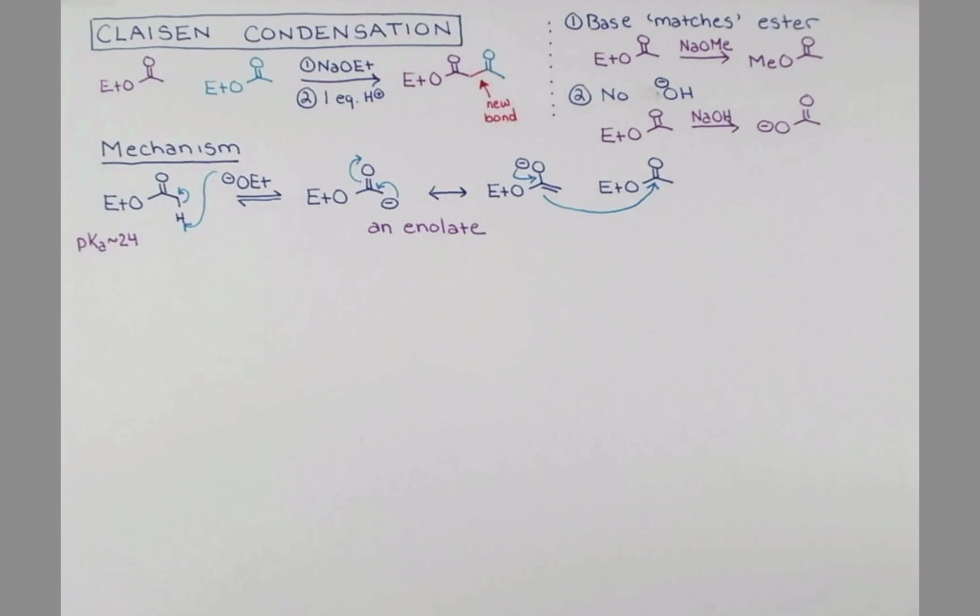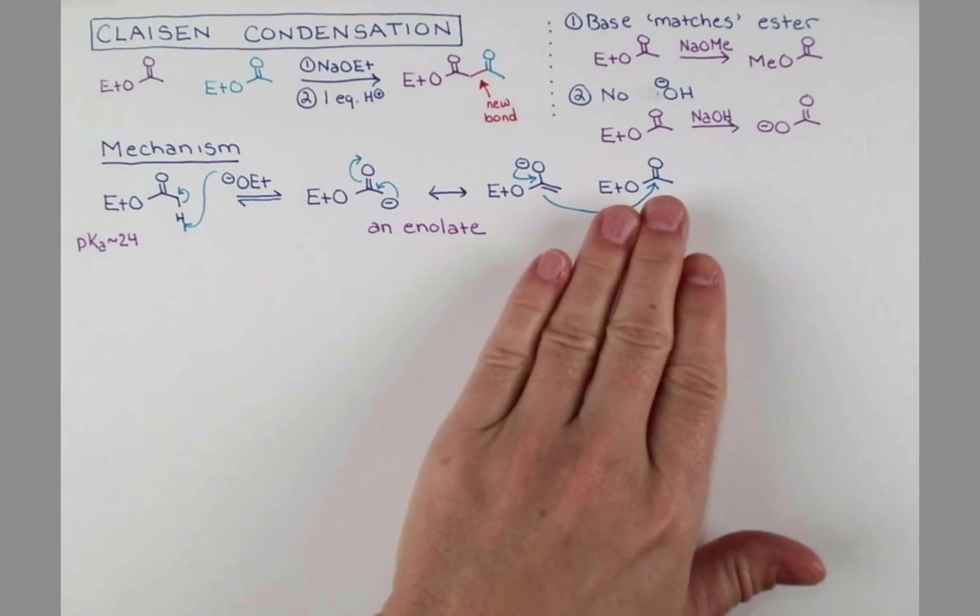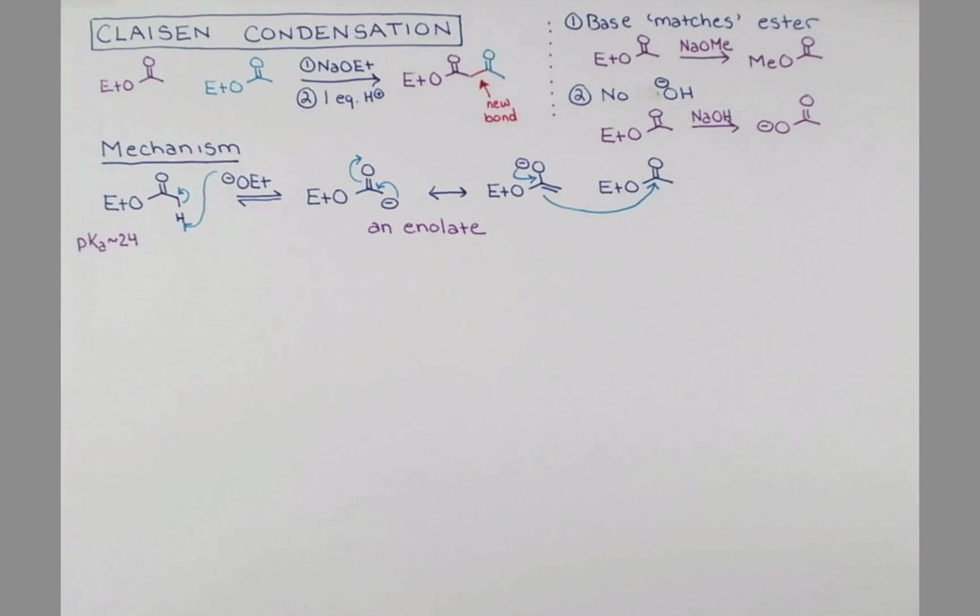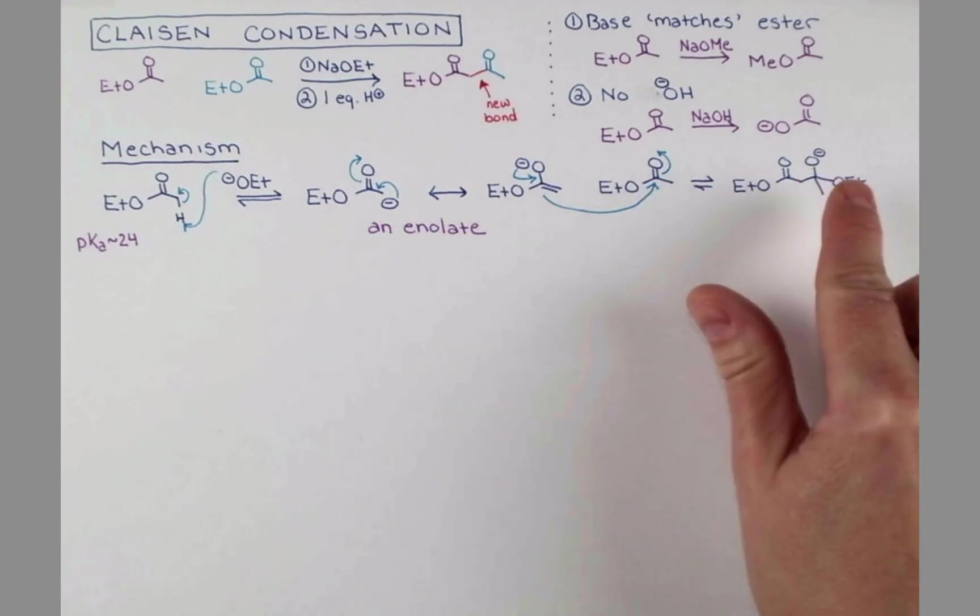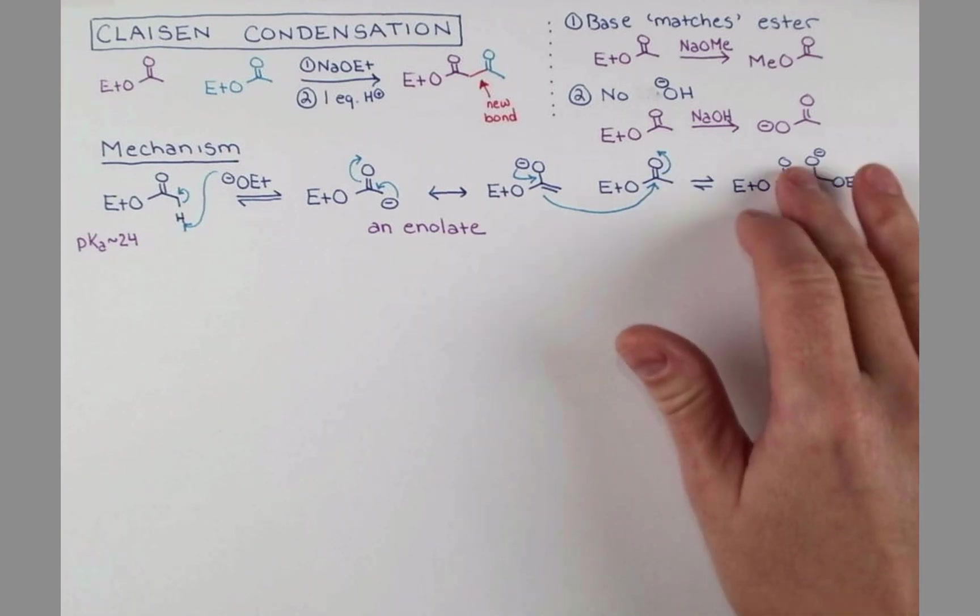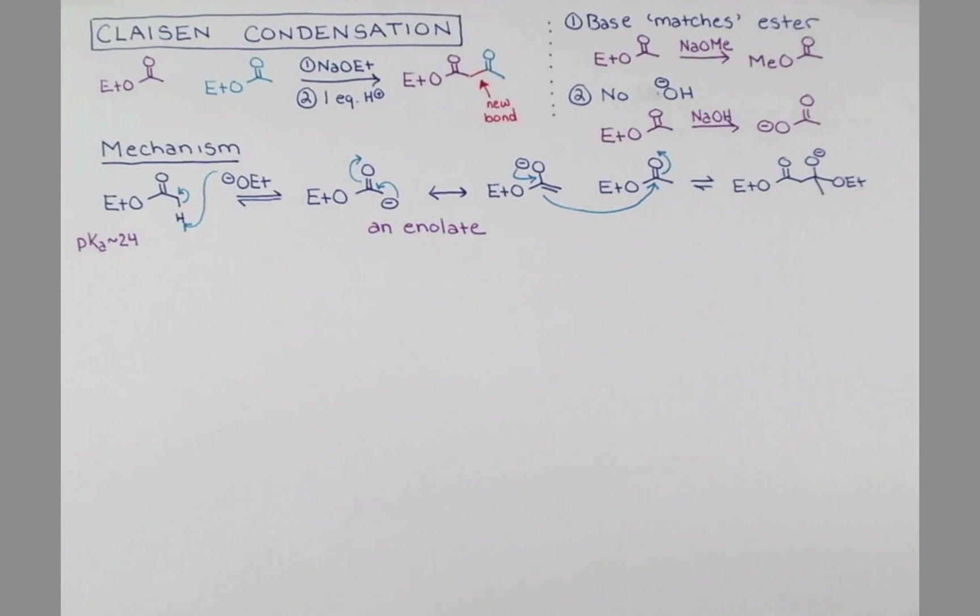And finally, we push electrons up onto oxygen so we don't make five bonds to carbon here. This forms an intermediate in which this sp2 center becomes sp3. This has tetrahedral geometry and we call this a tetrahedral intermediate.